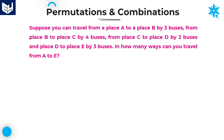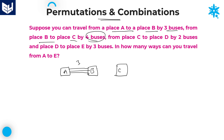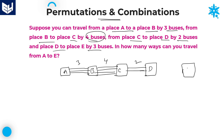Suppose you can travel from place A to place B by three buses. From place B to C, four buses are available. From place C to D, only two buses are available. And from D to E, three buses are available. This is the entire information which is provided.